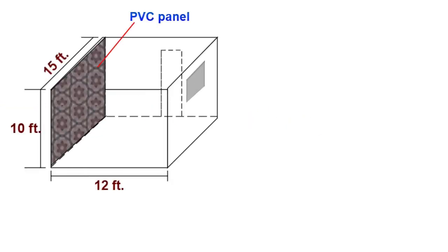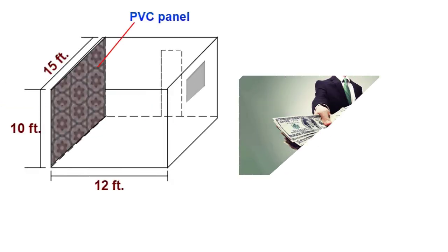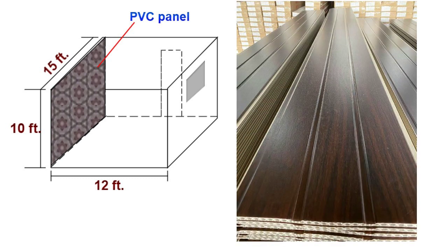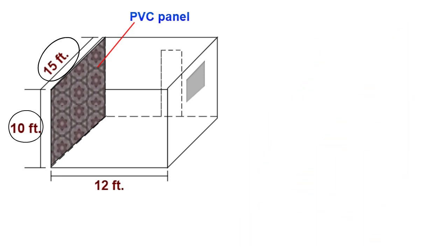Hello friends. In this video we will discuss how much amount shall be required for installing PVC panels on a 10 feet by 15 feet wall. First of all we need to calculate the area of the wall. That is 10 feet into 15 feet, which is equal to 150 square feet.